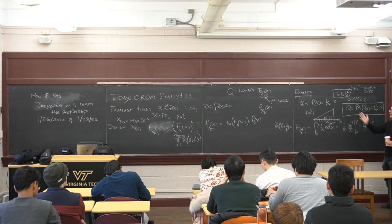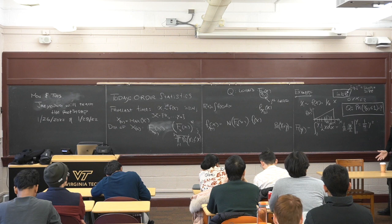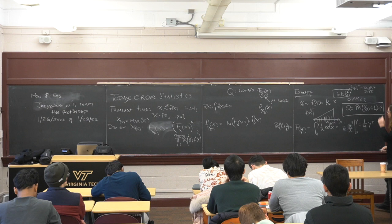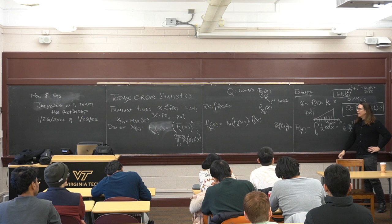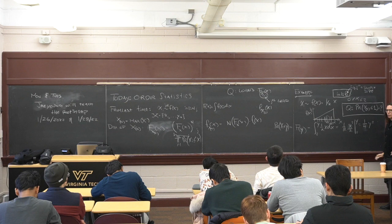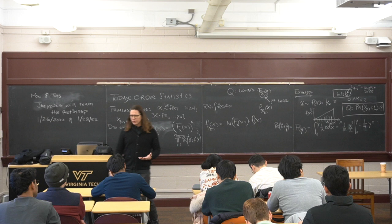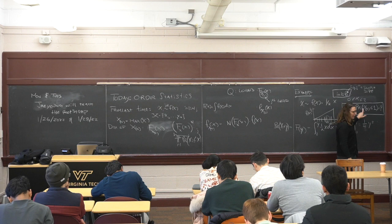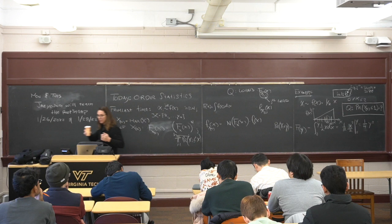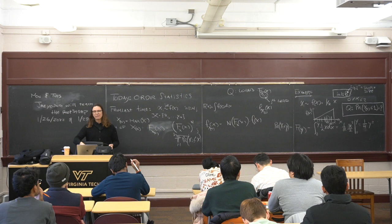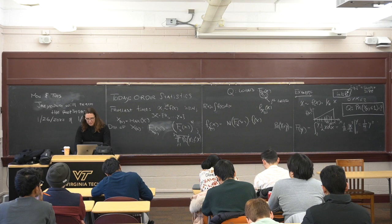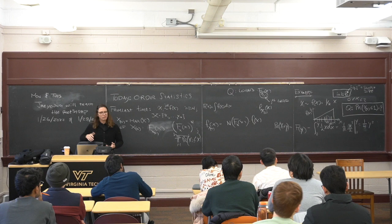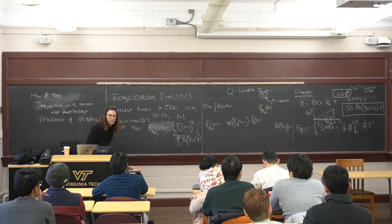Let's come back to this problem. Instead of talking about the j-th order statistic abstractly, let's conceptualize an easy problem and work through the arithmetic. I'm going to think about a specific density function and collect six data points from it, talking about the distribution of the fifth order statistic. I picked these numbers because I can work through the calculus relatively easily. I like to think about this as a process first, then do the math that mimics it.